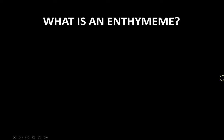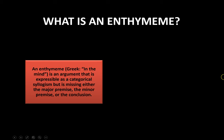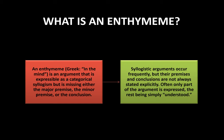What's an enthymeme? An enthymeme is an incomplete categorical syllogism. Enthymeme is Greek for 'in the mind.' It's an argument that is expressible as a categorical syllogism but is missing either the major premise, the minor premise, or the conclusion. These types of arguments happen frequently — typically this is how we use categorical syllogisms. We don't state everything in such a formal manner; we just bridge the gap in our own heads.